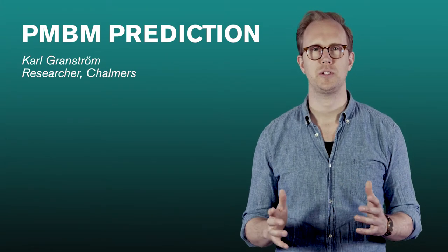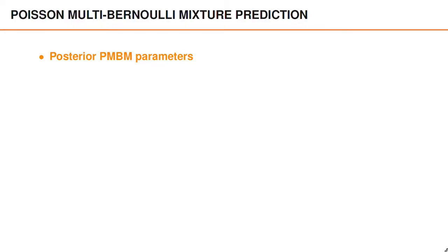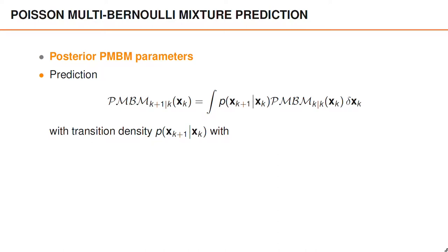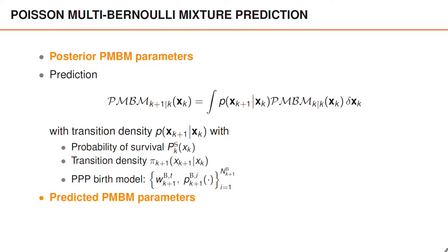The topic of this video is the prediction of a PMBM density. The PMBM prediction begins with the posterior parameters, and what we are seeking is the predicted PMBM density. To compute this, we have a set transition density with a probability of survival ps, a single object transition density pi, and a Poisson point process birth model that has a mixture representation with NB components with weights WB and densities PB. The goal is to find the parameters of the predicted PMBM density.